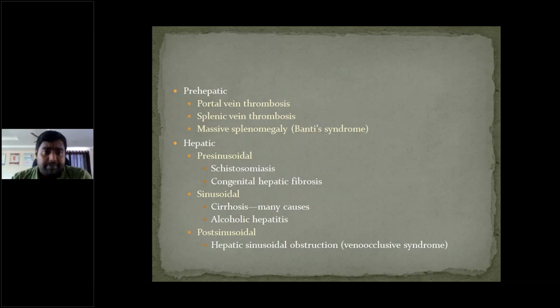Intrahepatic is divided into pre-sinusoidal, sinusoidal, and post-sinusoidal. Pre-sinusoidal is caused by schistosomiasis — when these worms are lodged in the liver — and congenital hepatic fibrosis. Sinusoidal is due to cirrhosis of many causes such as alcoholic or toxic cirrhosis. Post-sinusoidal is hepatic sinusoidal obstruction or venoocclusive syndromes.